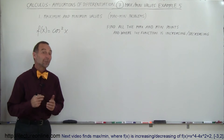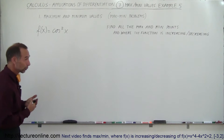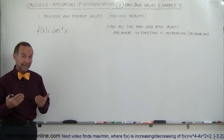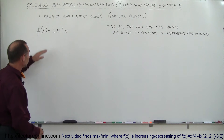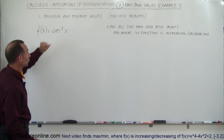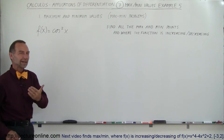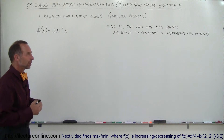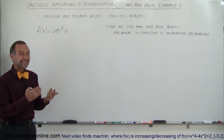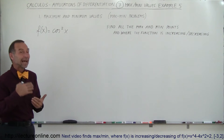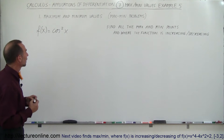Welcome to iLectron Online. We're going to find the max and min of a trigonometric function — the cosine squared of x. This will probably be a local max and local min, because with trigonometric functions like this you usually don't find an absolute max or an absolute min. So let's find out.